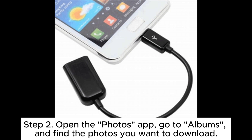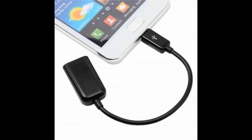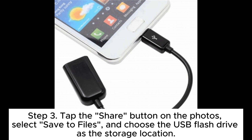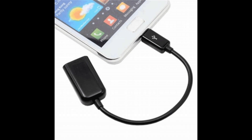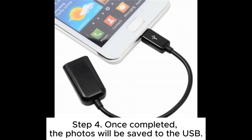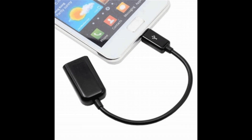Step 2: Open the Photos app, go to Albums, and find the photos you want to download. Step 3: Tap the Share button on the photos, select Save to Files, and choose the USB flash drive as the storage location. Step 4: Once completed, the photos will be saved to the USB.